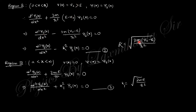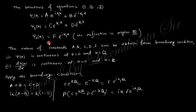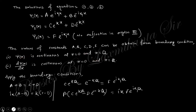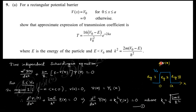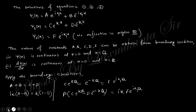The solution of these three equations is as shown. In region 3 there is no reflected part, so there is no negative exponential term. The constants A, B, C, D, F can be obtained using the boundary conditions: the wave function ψ(x) is continuous at x = 0 and x = a, and the derivative dψ/dx is also continuous at these two points.